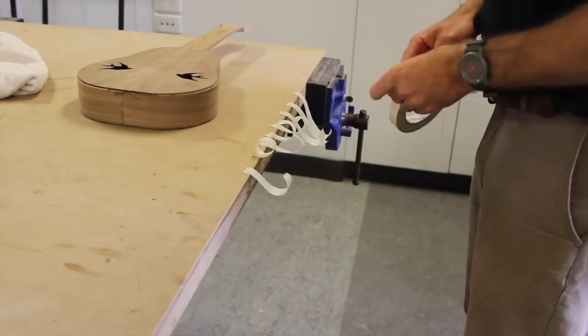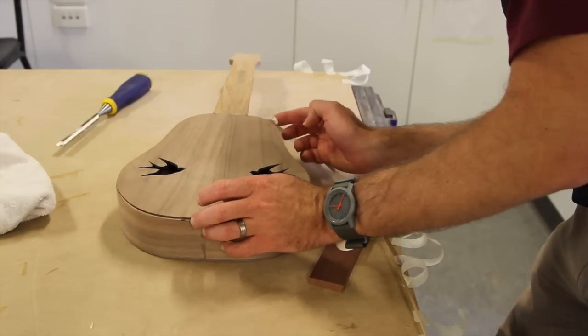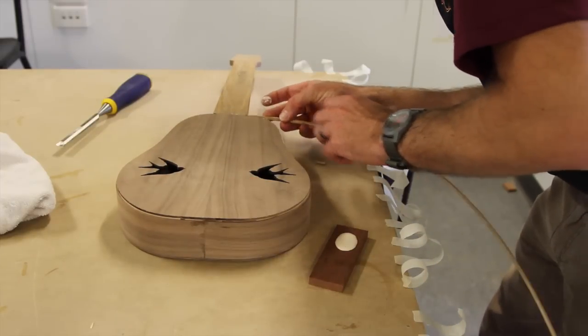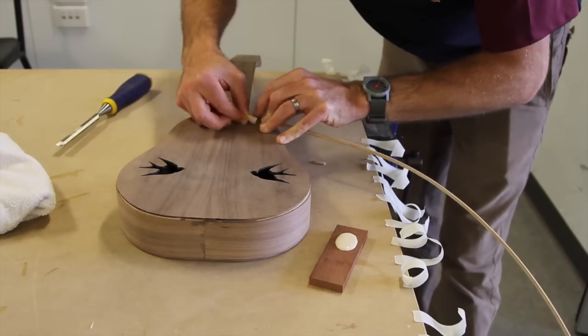Get prepared for gluing by ripping off lots of strips of tape. Then apply the glue over short sections at a time and start putting the binding in place. As you're moving along, use the tape to hold the binding in position.